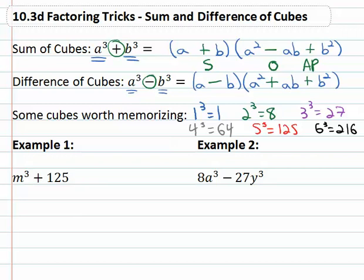So as I look at a problem like m³ + 125, I see two terms so I'm thinking shortcut. I see cubes and so I'm thinking cubes formula.